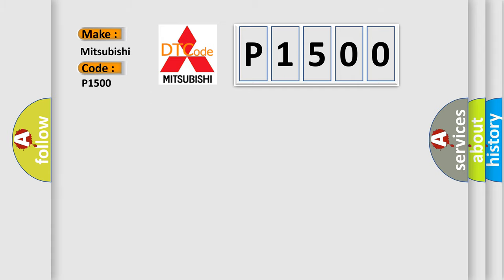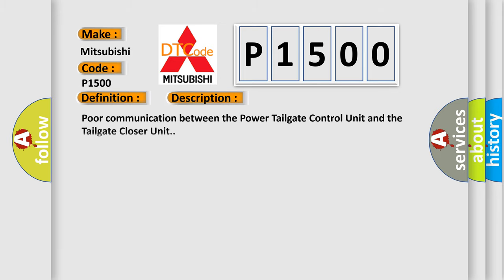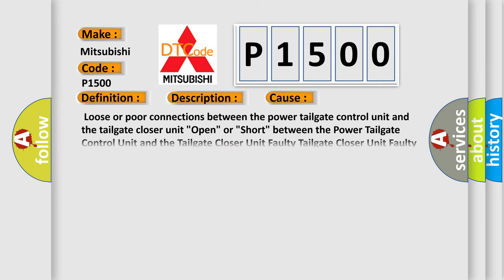The basic definition is: power tailgate closer unit release switch circuit malfunction. This is a short description of this DTC code: poor communication between the power tailgate control unit and the tailgate closer unit. This diagnostic error occurs most often in these cases: loose or poor connections between the units, open or short circuit between the units, faulty tailgate closer unit, or faulty power tailgate control unit.